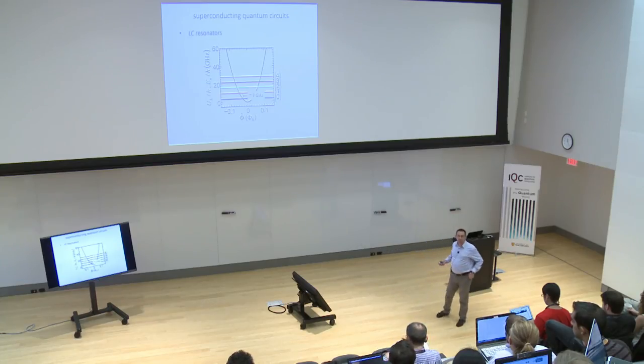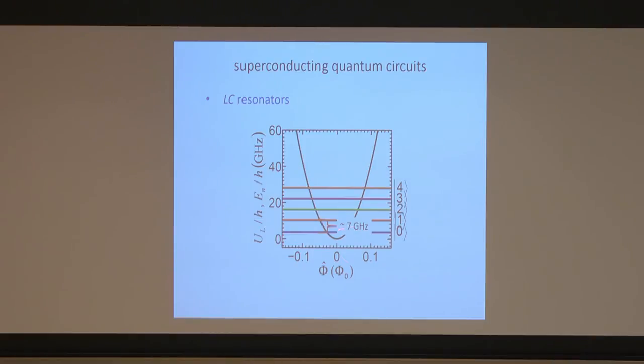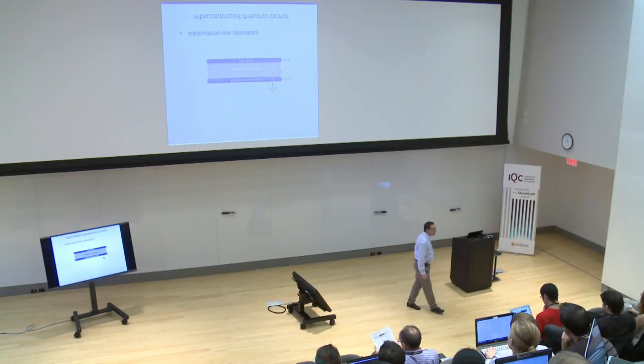Our devices work in the gigahertz regime, roughly 5–10 GHz. If you know a little thermodynamics, you understand why we cool them beyond one kelvin to 10 millikelvin: a frequency in this range corresponds to an energy equivalent to about 100 millikelvin. To prepare the system in the ground state zero, we need to cool down sufficiently so that thermal fluctuations do not populate higher states of the ladder.